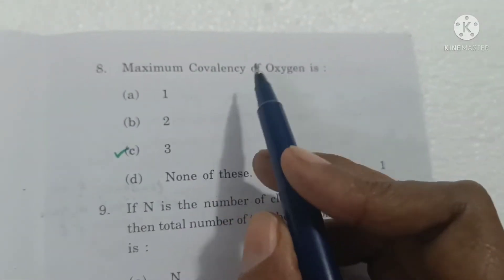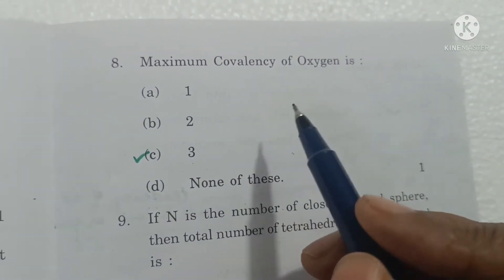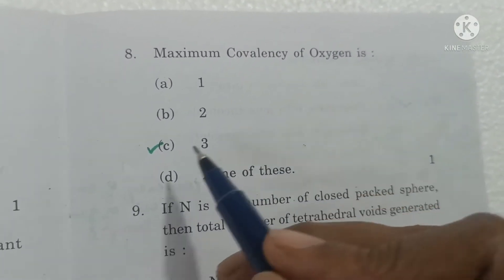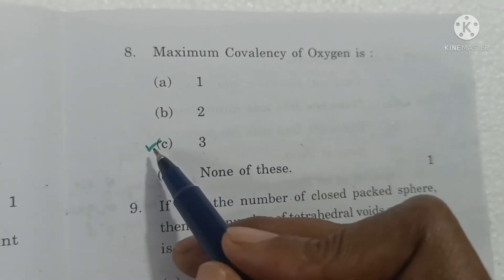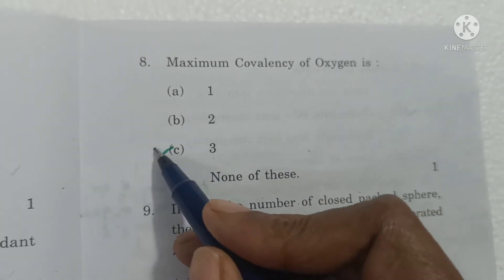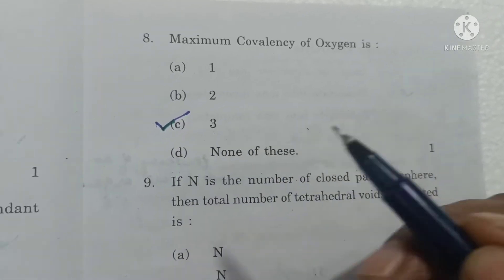Maximum covalency of oxygen: normally oxygen forms two bonds but using its lone pair of electrons it can form three bonds also. So maximum covalency will be three.